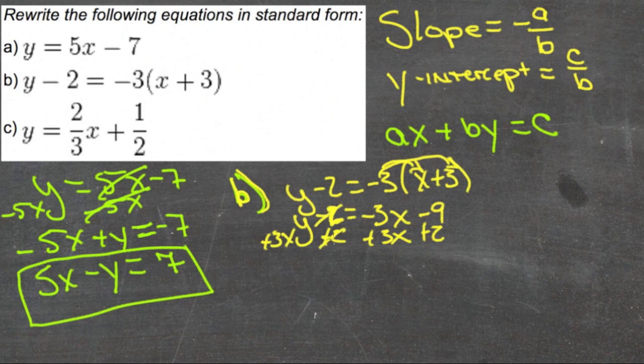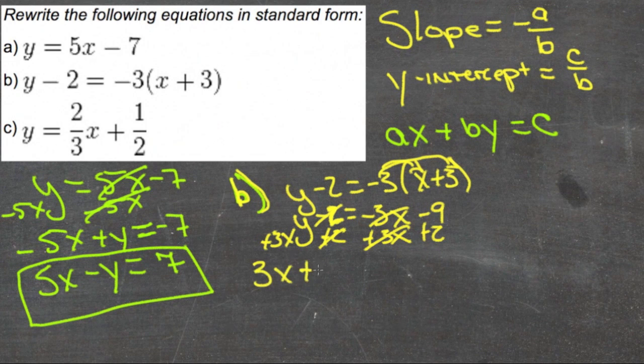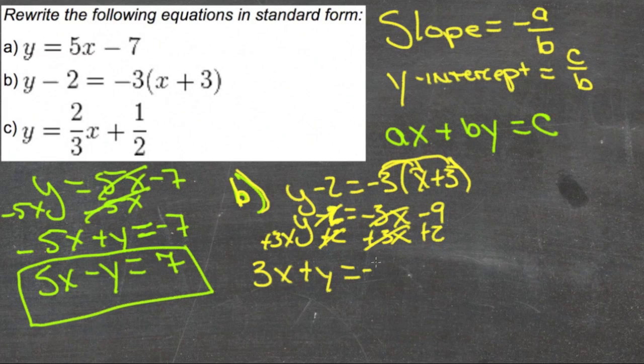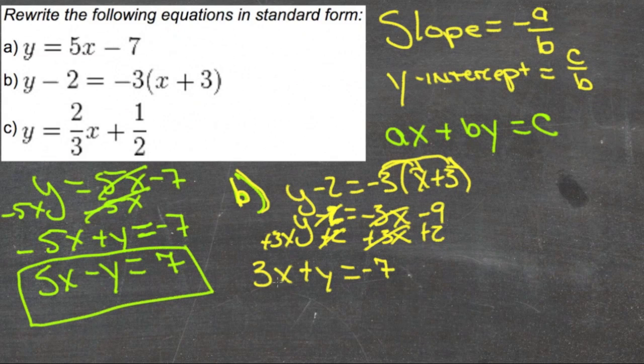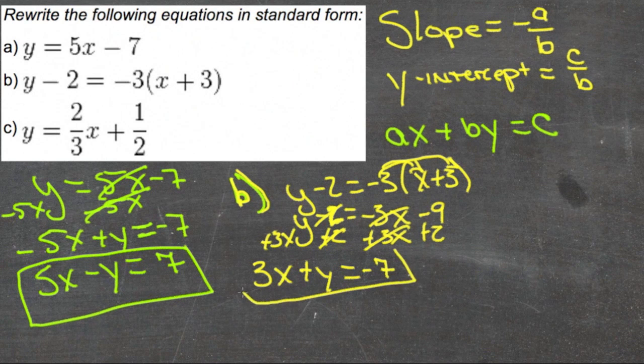Our 2s will cancel and our x's will cancel. We'll have 3x plus y equals negative 9 plus 2, which is negative 7. Now our x coefficient is positive, both variables are on the same side, and they equal a constant. So we have it in standard form.